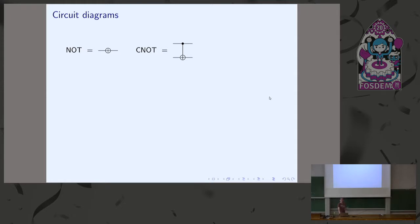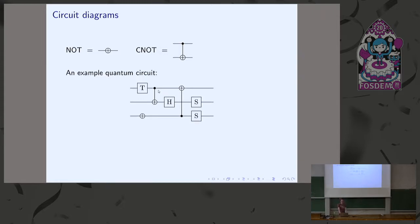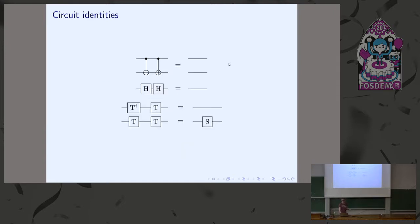Quantum circuits have a special graphical notation. The NOT gate is written with an XOR symbol, and the controlled NOT gate is like an XOR with a control wire attached. Each line in the diagram represents a qubit, and time goes from left to right. You have different circuits that represent the same computation — for instance, two controlled NOT gates on the same qubits in a row is equivalent to doing nothing, because the NOTs cancel each other out. Similarly, two Hadamard gates cancel each other out. These circuit identities can be used to simplify circuits.